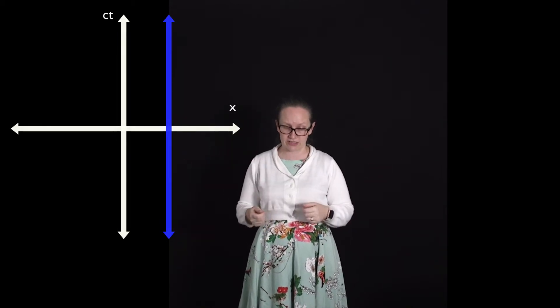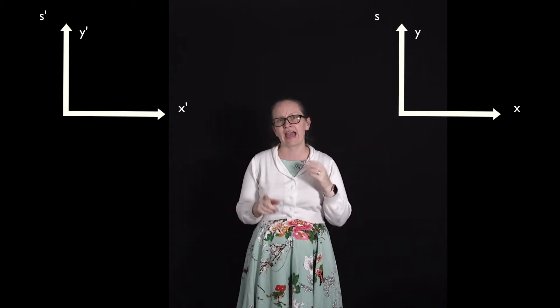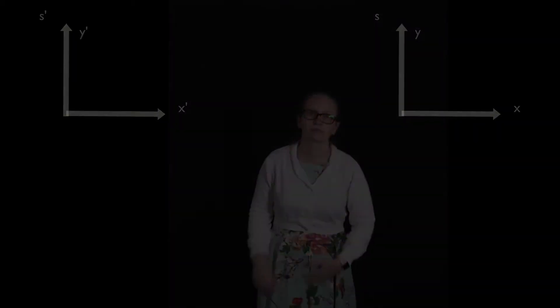Another thing we want to be able to do is to relate to different reference frames as we've been doing previously. So if we have reference frame S and reference frame S', which is moving with a speed u as measured from reference frame S, let's have a look at how we could draw the axes for our primed frame on the axes for our unprimed frame.